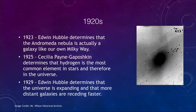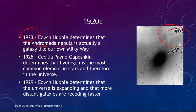Going back to the 1920s, one of the things discovered in 1923 is that Edwin Hubble determined that the Andromeda nebula was actually a galaxy like our own Milky Way. He saw variable stars in images of the Andromeda galaxy, and because he identified them as Cepheid variables, he was able to use them to determine distances. Prior to 1923, we did not know for sure that spiral nebulae were actually galaxies like our own.